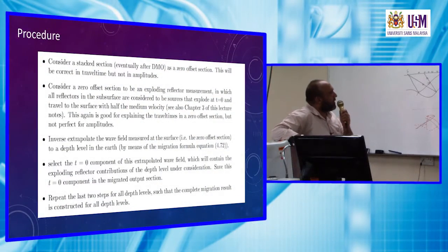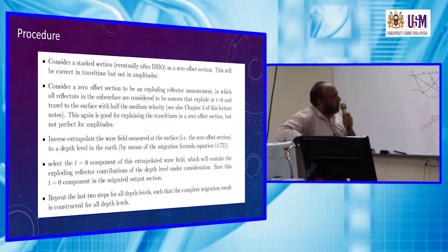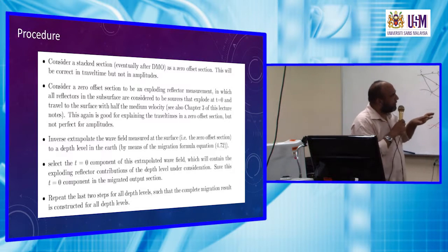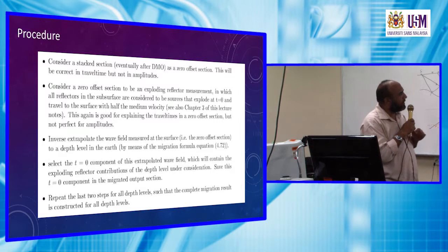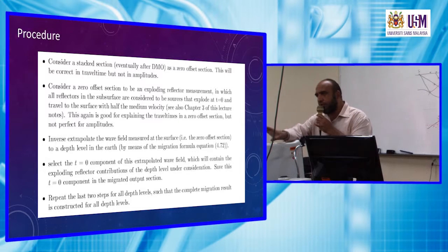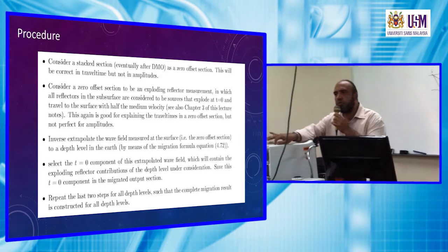The procedures are as follows. First, consider a stacked section — after the depth moveout correction, this stacked section is a zero offset section, which will be correct in travel time but not in amplitude. Second, consider the zero offset section to be an exploding reflector measurement, in which all reflectors in the subsurface are considered to be sources that explode at T equals zero. We don't have one T equals zero for all sections — rather, we have as many T equals zero values as there are reflectors.